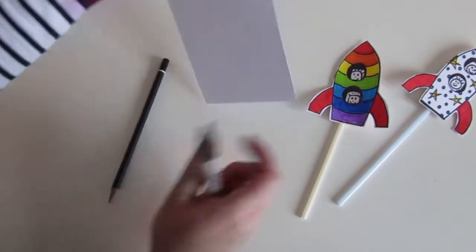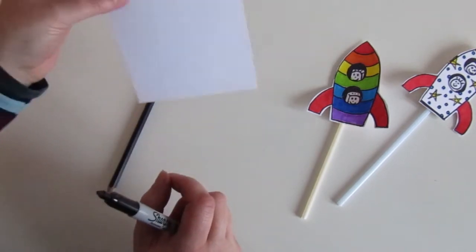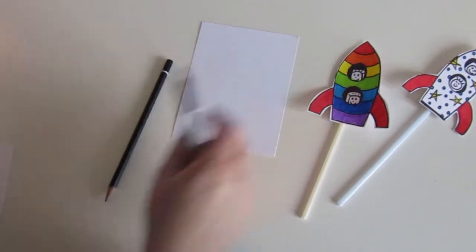I've just got a white card here. It doesn't have to be white but it does have to be quite thin, and the first job you need to do is to draw the shape of your rocket.